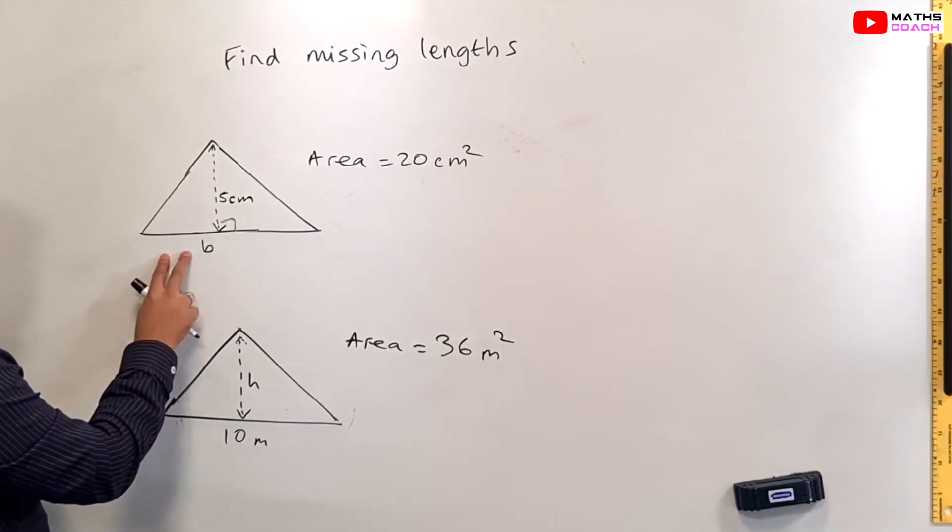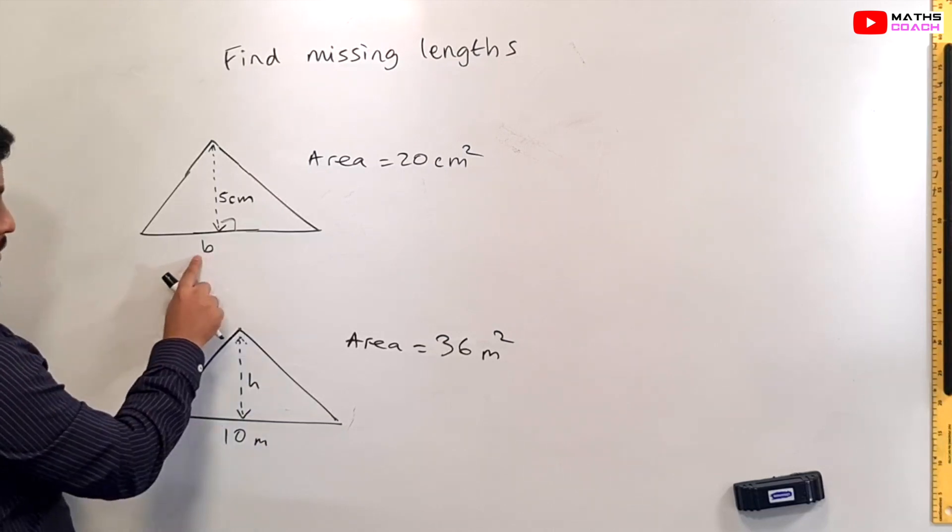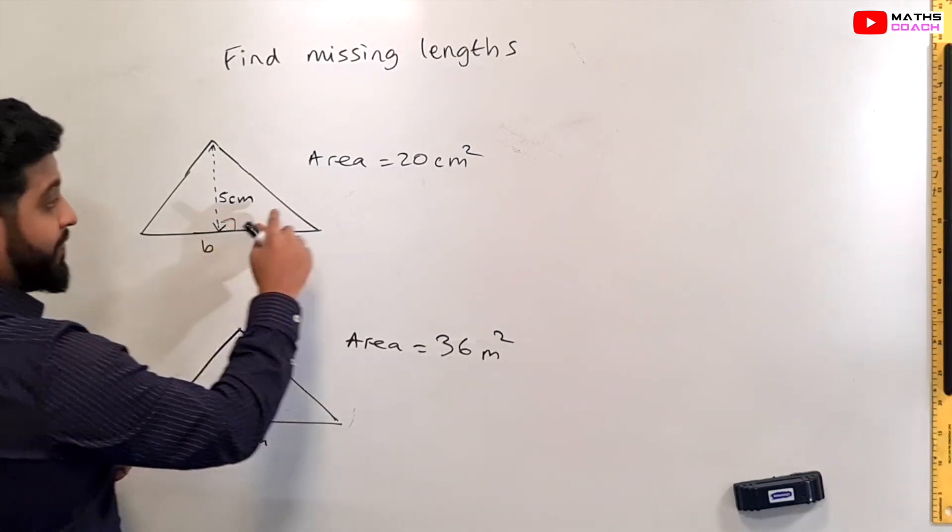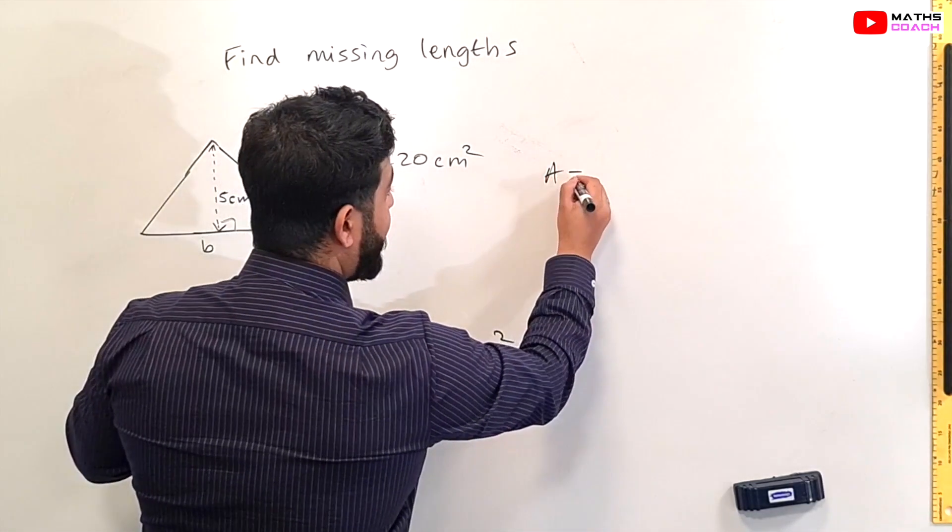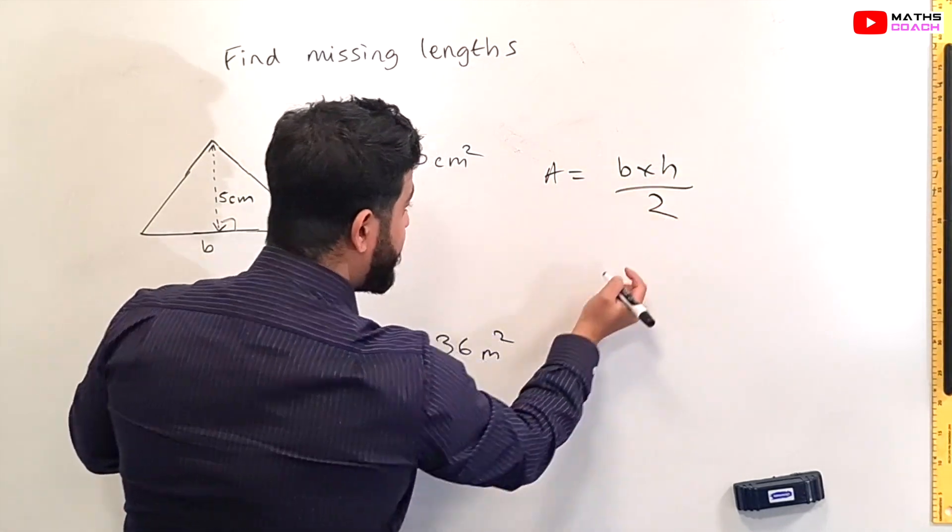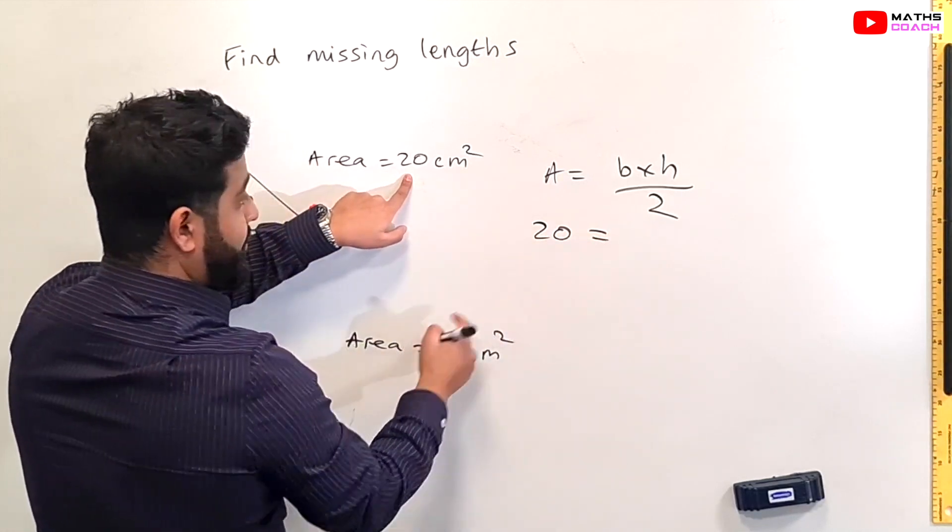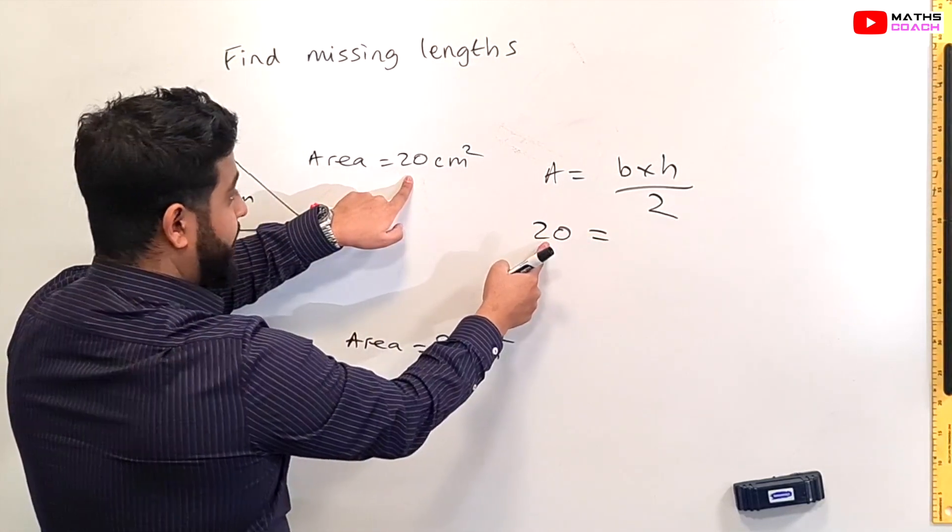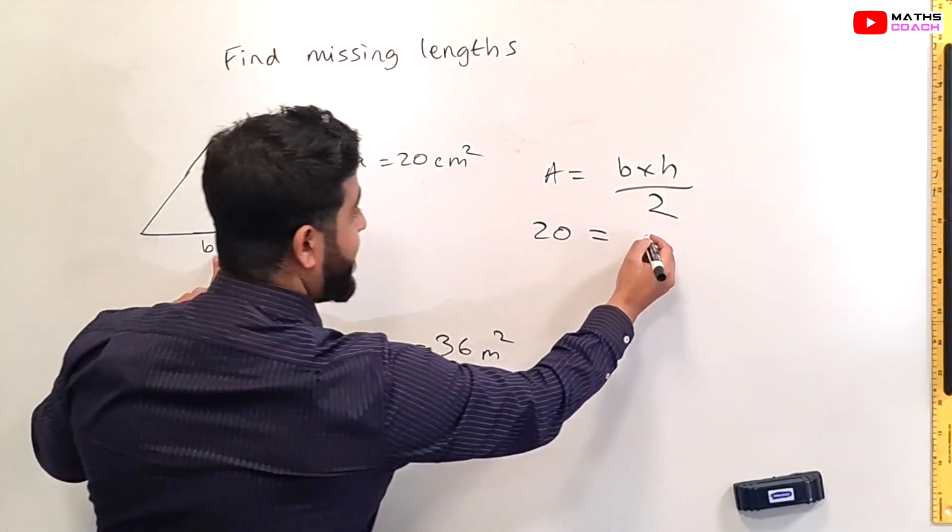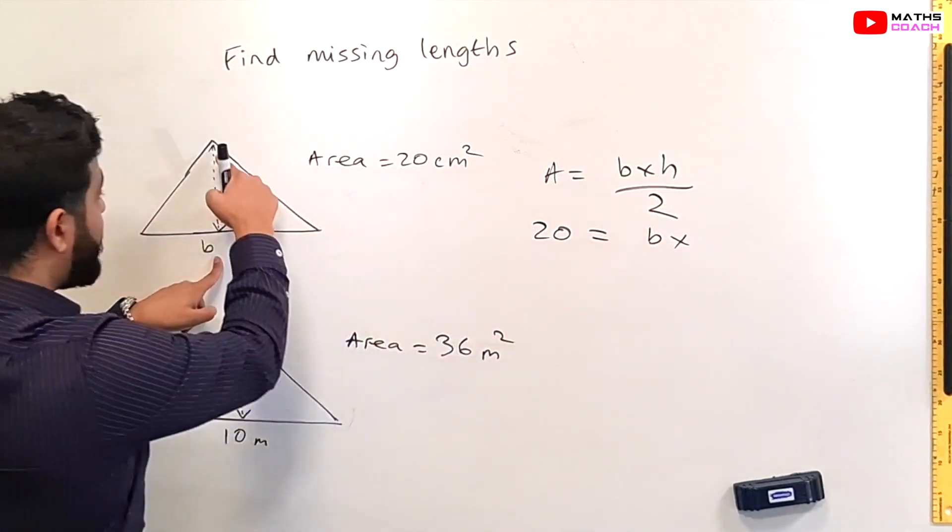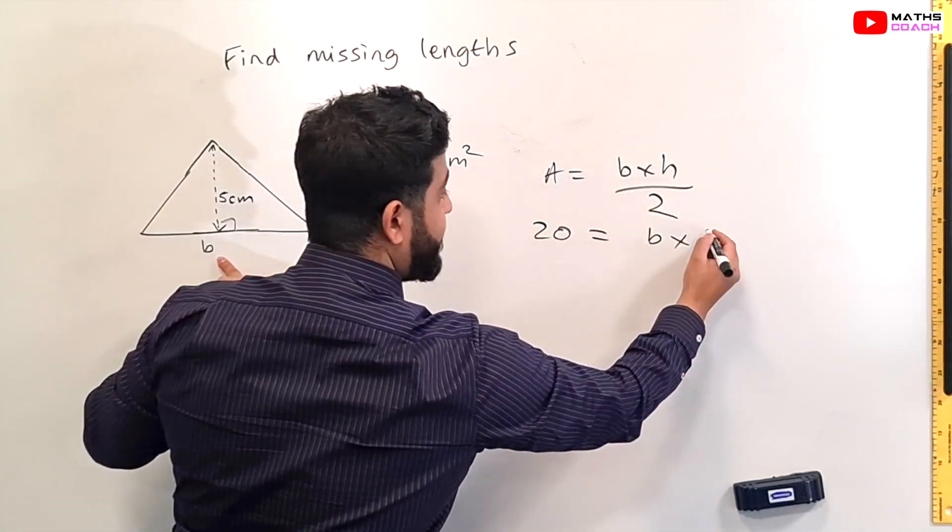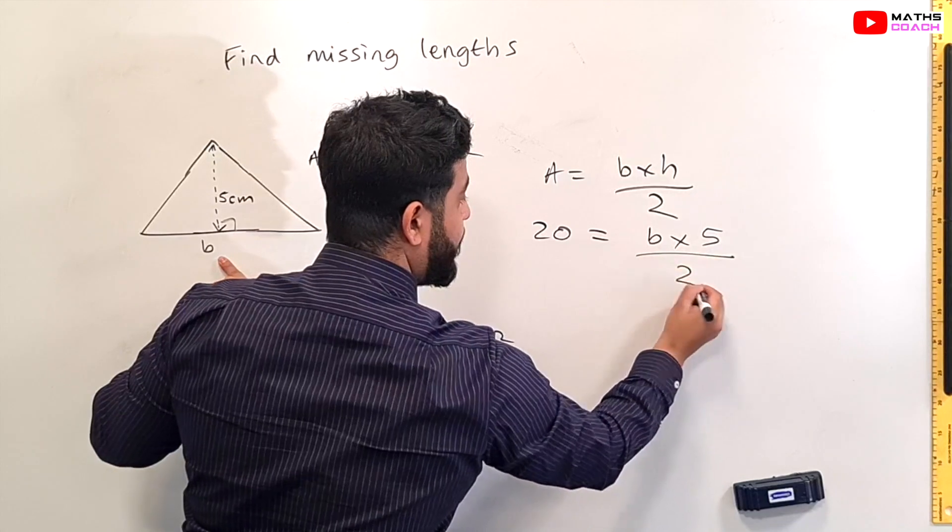So what do we have for the first one? We have the base which is unknown and we have the height which is 5. So let's set this up now. We know that the area of a triangle is base times height divided by 2. This time we know the area is 20. So we can write A as 20. We don't know the base so we can write b still and we know the height is 5. So we can have b times 5 over 2.